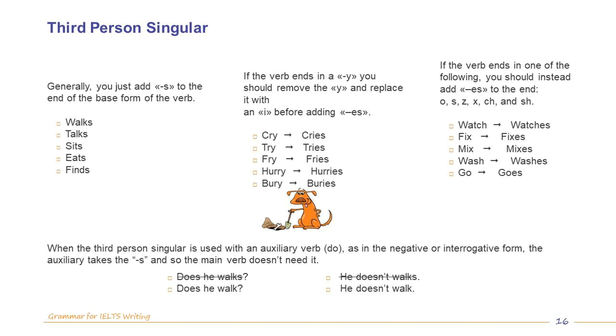When the third person singular is used with an auxiliary verb, such as do, as in the negative or interrogative form, the auxiliary takes the S and so the main verb doesn't need it. For example, we don't say does he walks, we say does he walk. We don't say he doesn't walks, we say he doesn't walk.